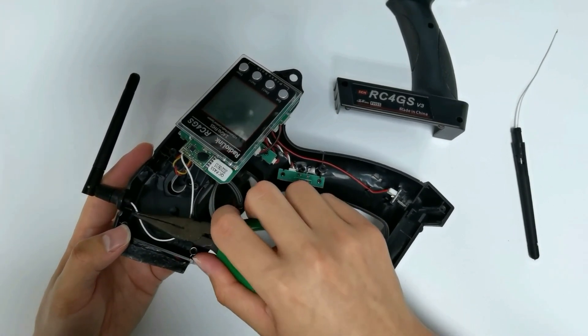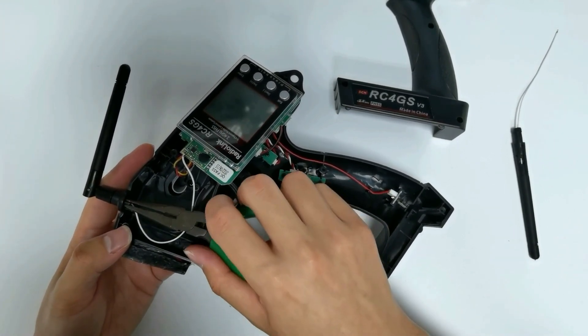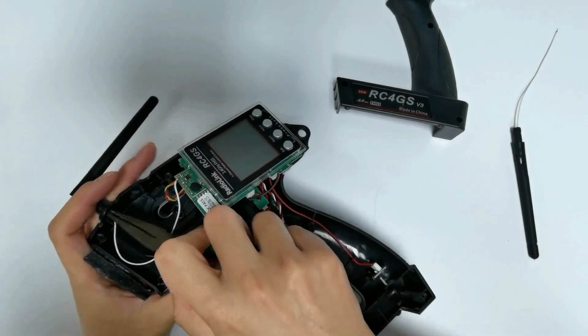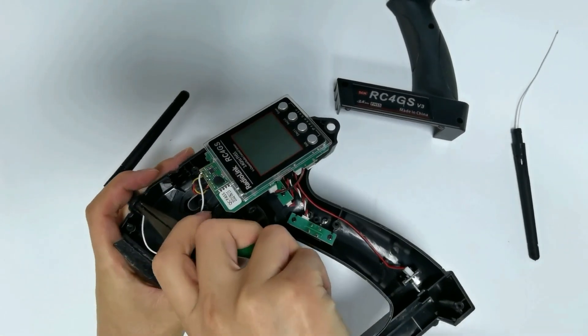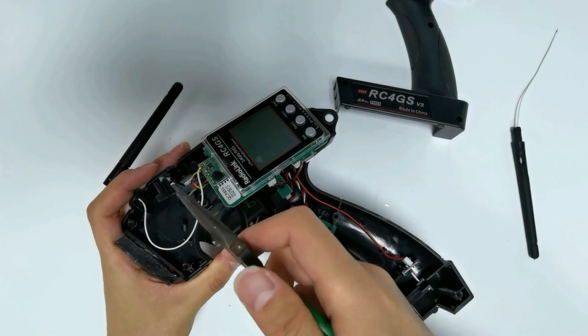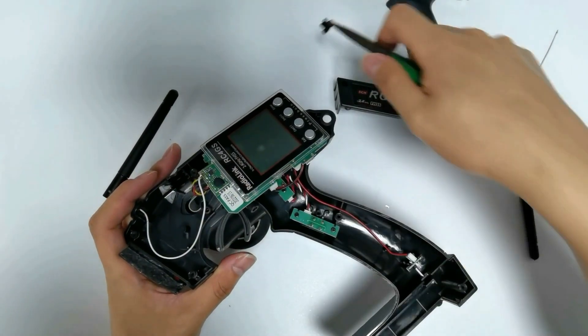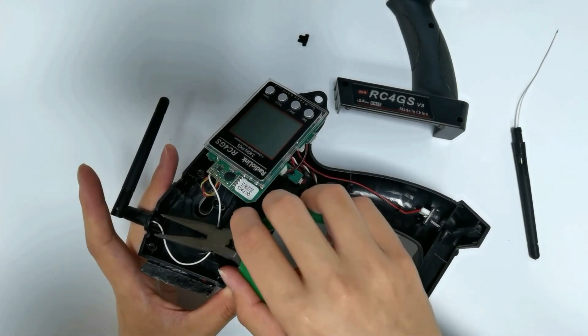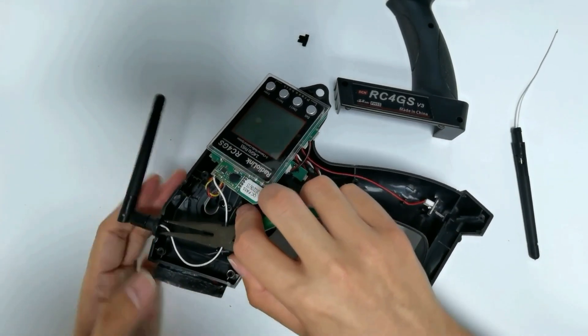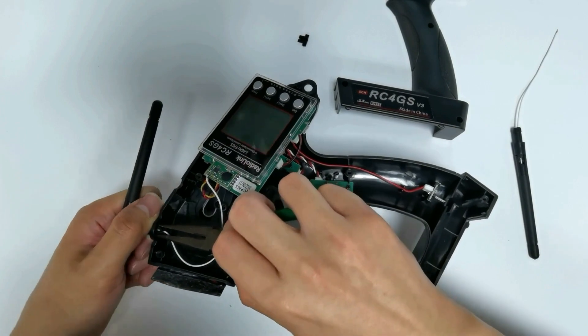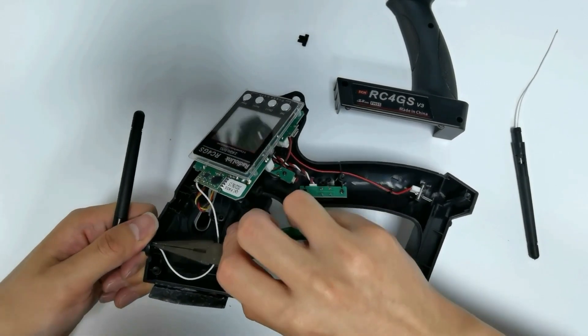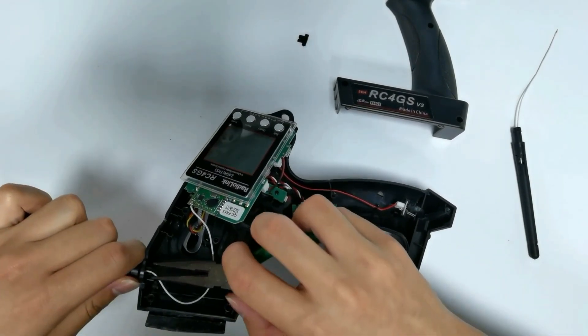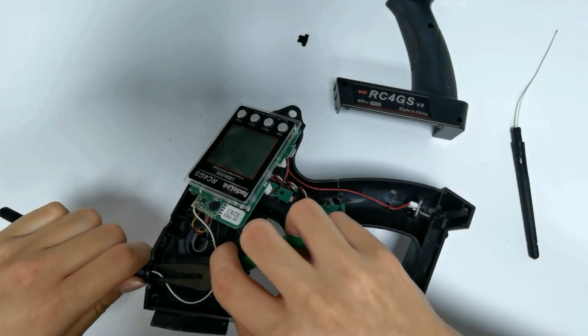Use a plier to remove the bolt. Here is the bolt. Clamp the buckles on both sides and pull the antenna out at the same time.